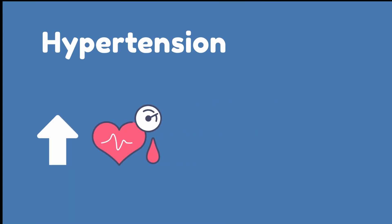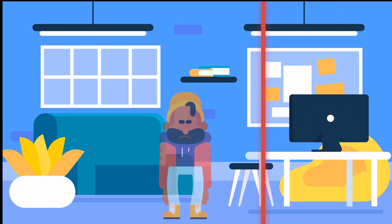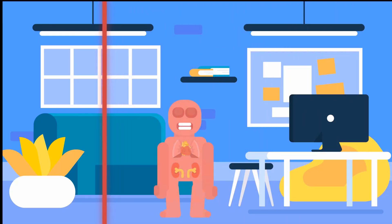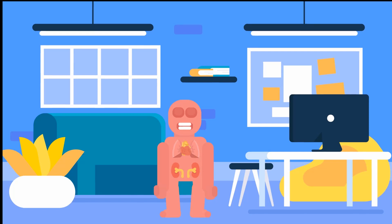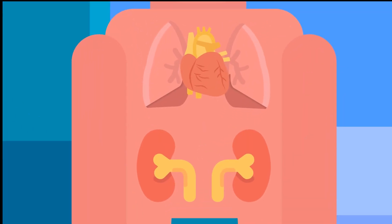Hypertension, or high blood pressure, is defined as the prolonged increase in blood pressure. Although patients might be asymptomatic, uncontrolled hypertension places them at risk for heart disease, stroke, and kidney disease.